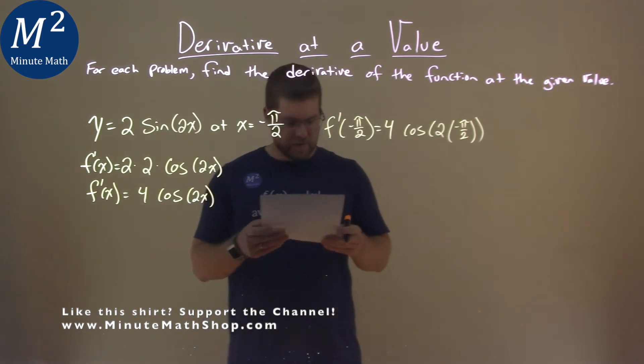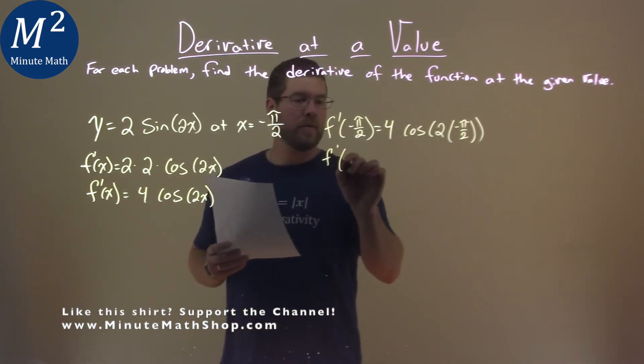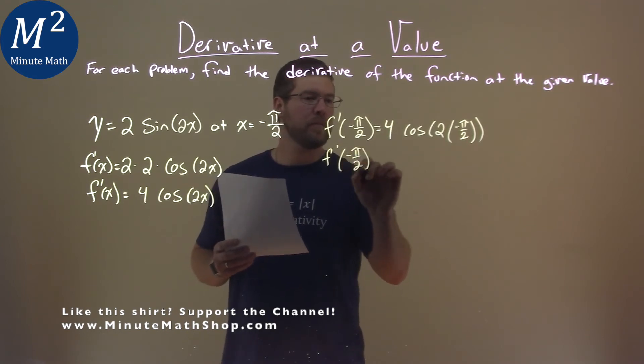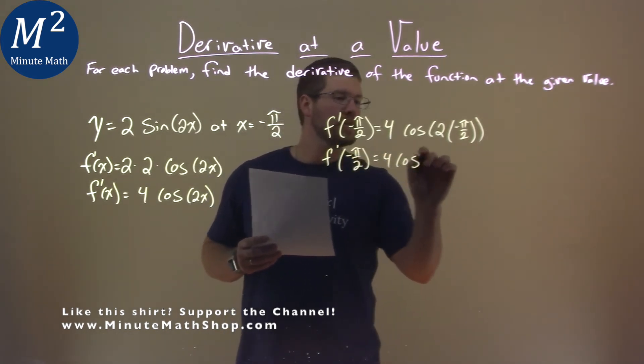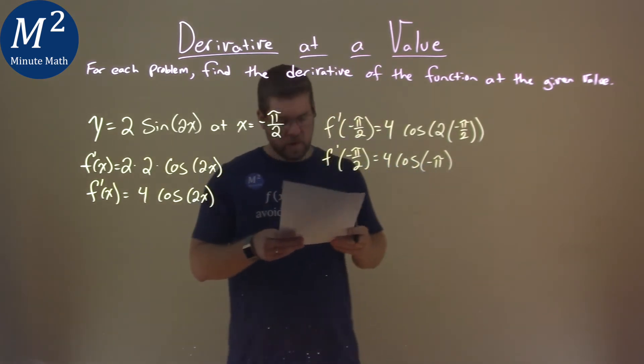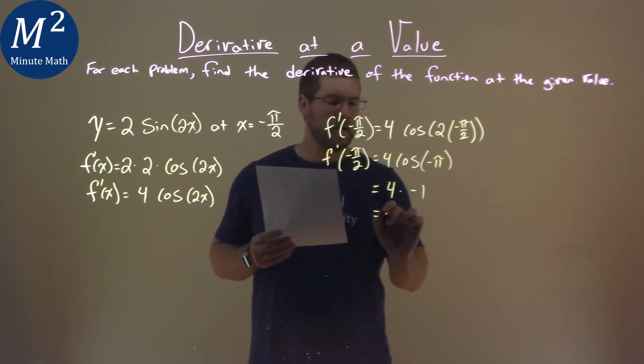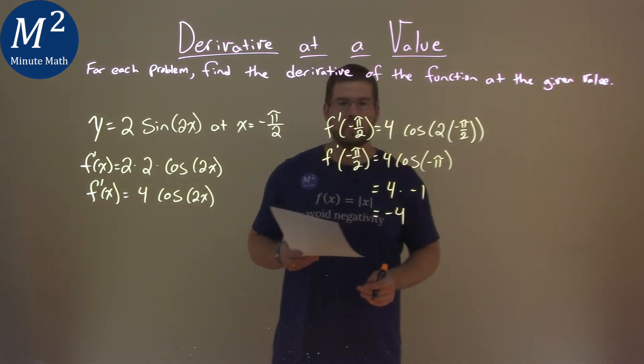And now let's simplify this. Well we have f prime of negative pi over 2 is equal to 4 cosine, 2's cancel out of negative pi. Cosine of negative pi is a negative 1, so we have 4 times a negative 1, and we have a negative 4 overall.